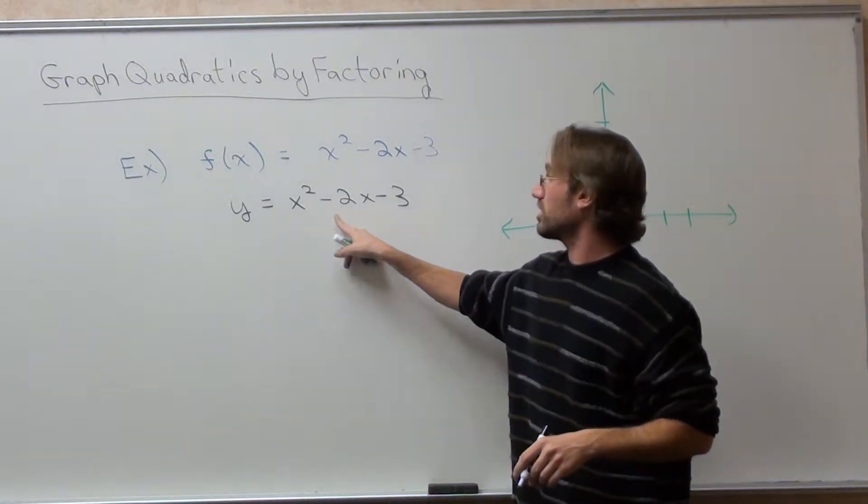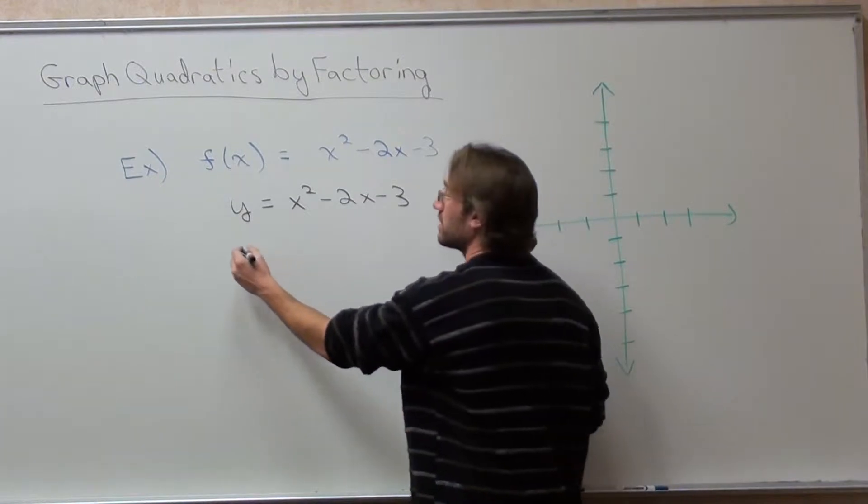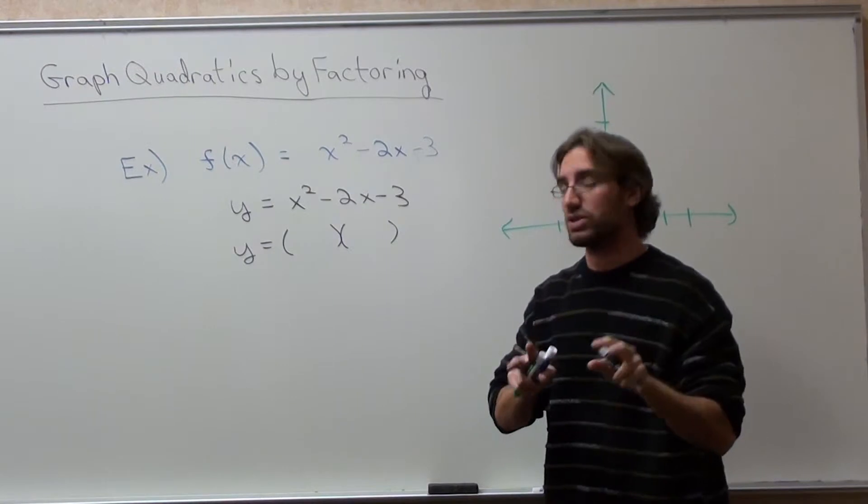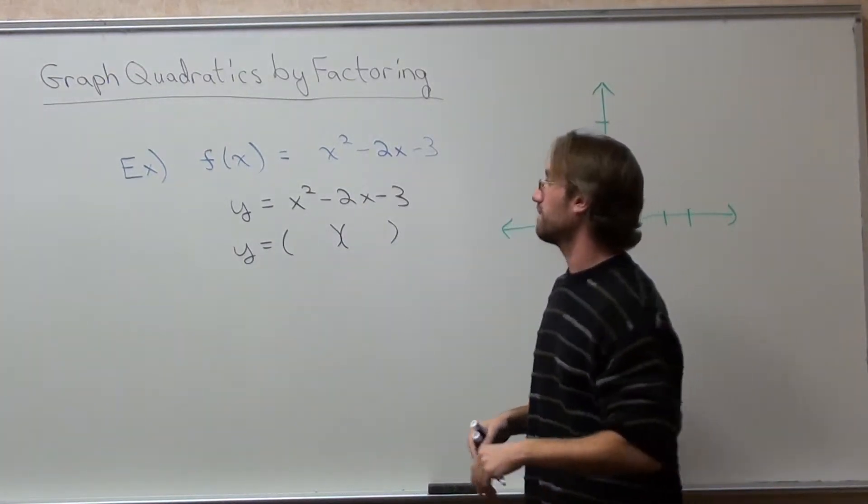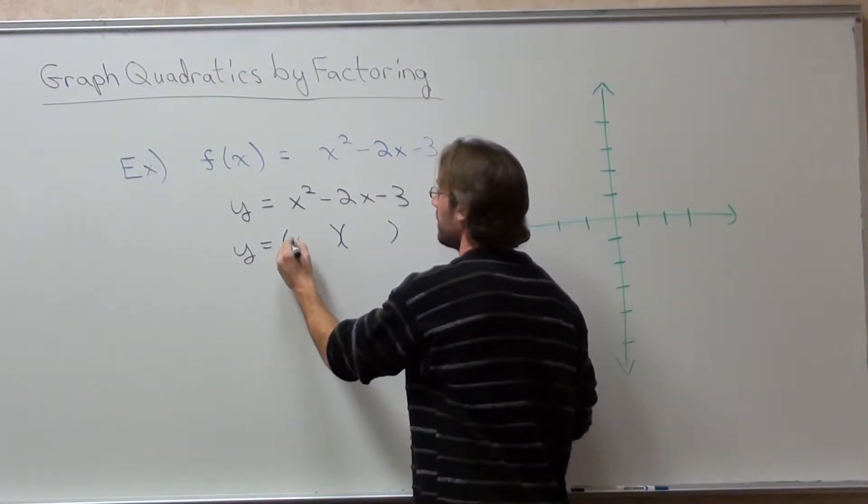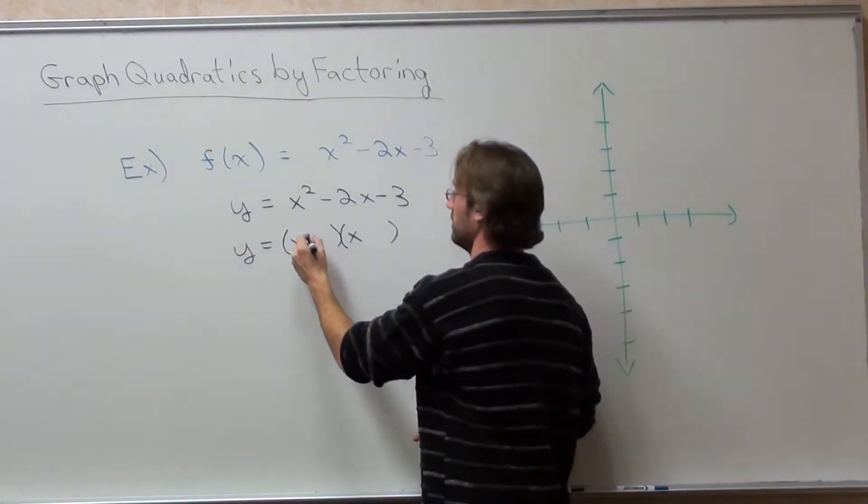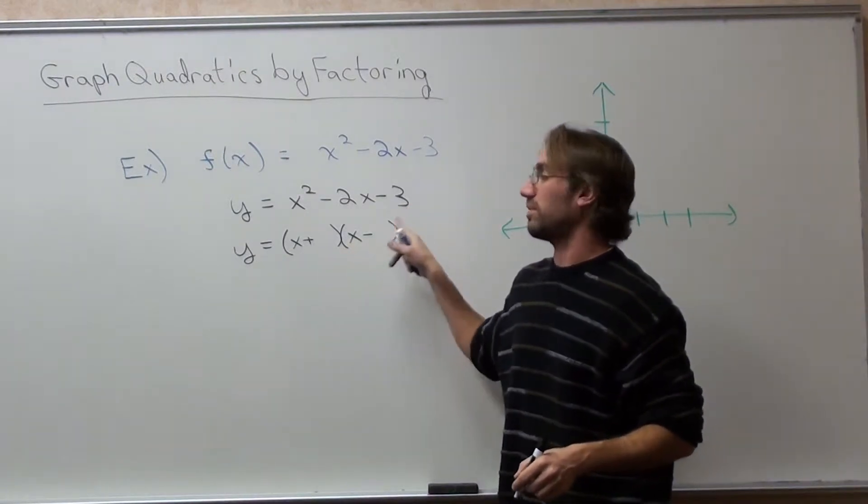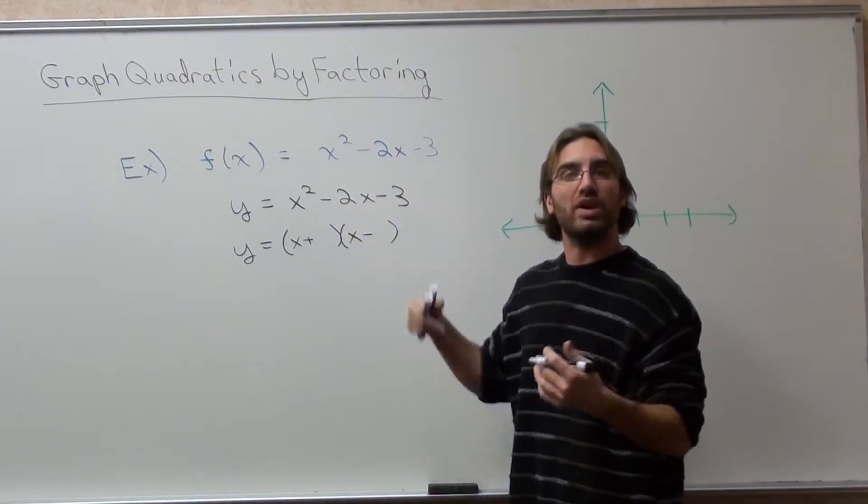I can actually factor x squared, subtract 2x, subtract 3. Go back to your own notes if you want to see it. But I can factor it into two binomials. There is no GCF, so I don't have to worry about taking out something beforehand. I know x times x is x squared. And I know a positive times a negative is a negative. And I know that it's going to be negative 3 plus 1, because that's going to give me a negative 3 when I multiply, but give me a negative 2 when I add them together.